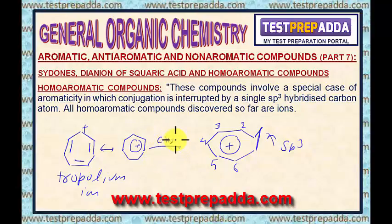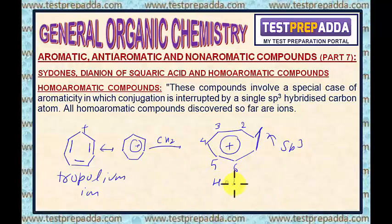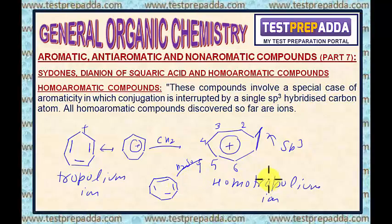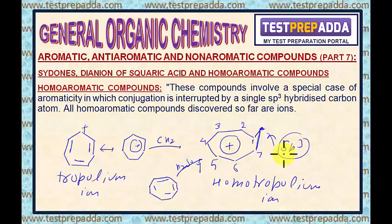When in this tropolium ion one CH2 is inserted, we get a compound known as the homotropolium ion. The same ion can also be obtained when cyclooctatetraene is dissolved in concentrated H2SO4 — a proton adds to one of the double bonds to form this homotropolium ion. In this ion also, 6 pi electrons are spread over 7 carbon atoms, and here interruption is there because of the sp3 hybridized carbon. Dear students, let me tell you that all homoaromatic compounds discovered so far are ions.